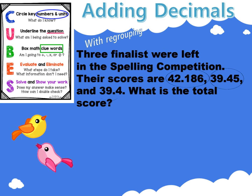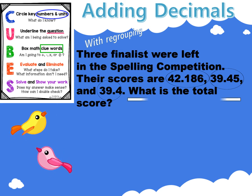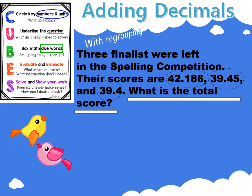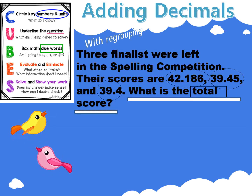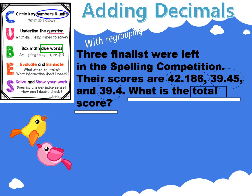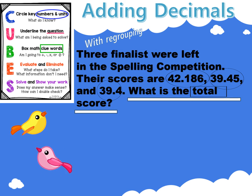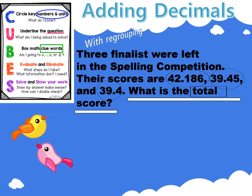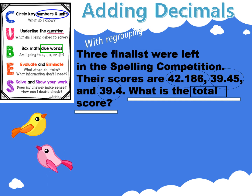Circle the numbers you know. Underline the question. Box the clue word. Now evaluate — the clue word is 'total score,' indicating we should add. I will use an addition number sentence to solve this problem.